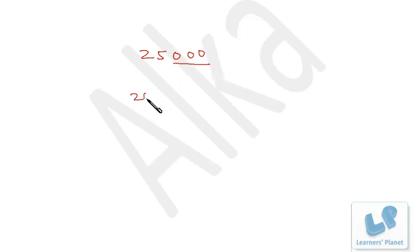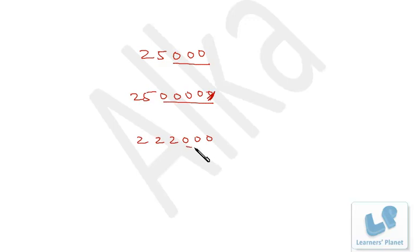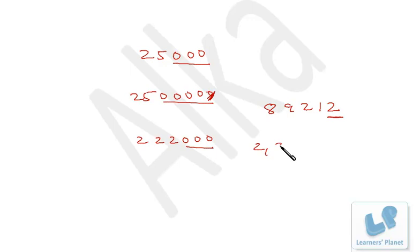Another important property: a perfect square cannot have an odd number of zeros at the end. For example, 25000 has three zeros (odd), so it is not a perfect square. A number with two zeros (even) at the end could be a perfect square. Similarly, 222000 has three zeros — not a perfect square. Also, 89212 ends in 2, so it's not a perfect square either.